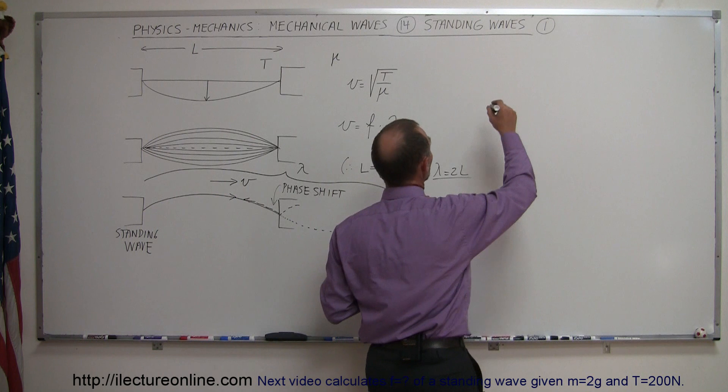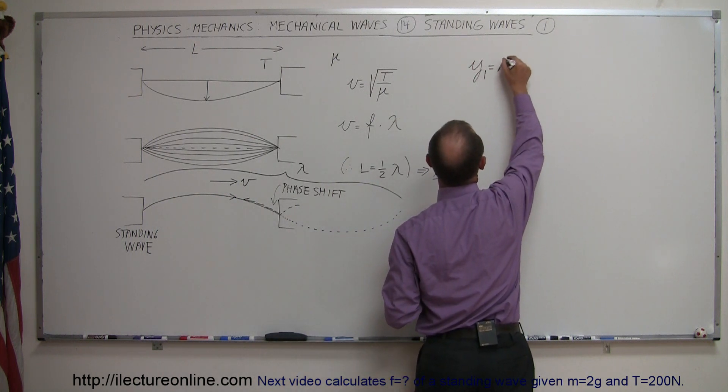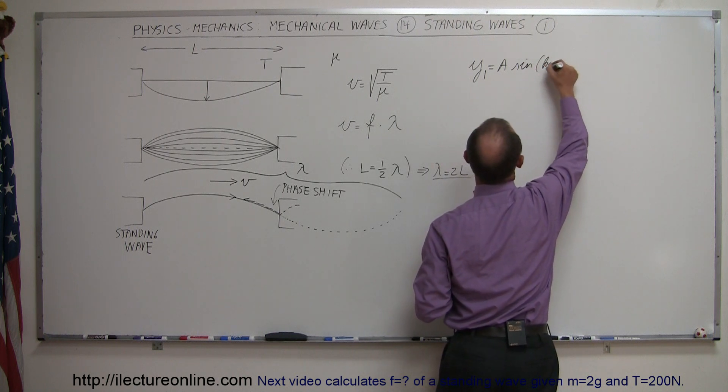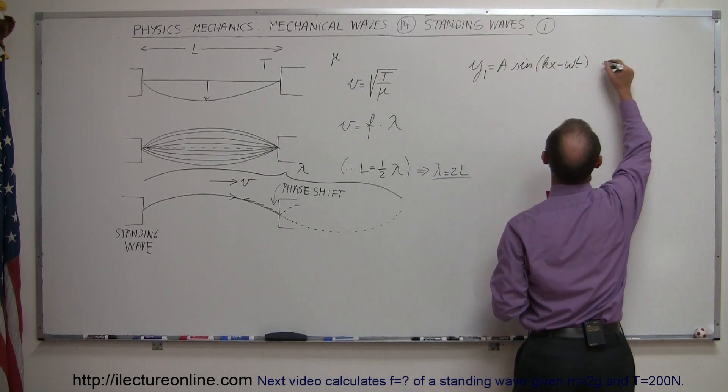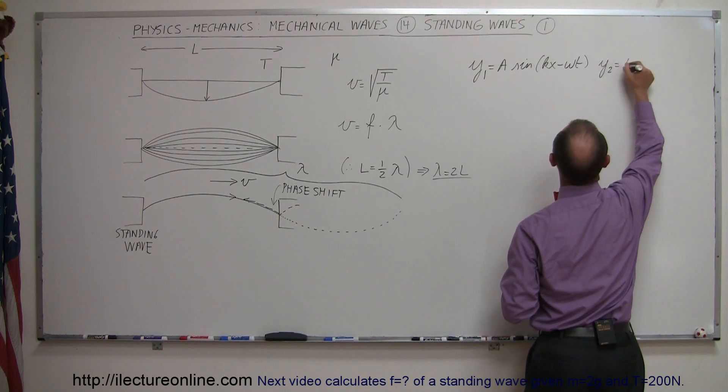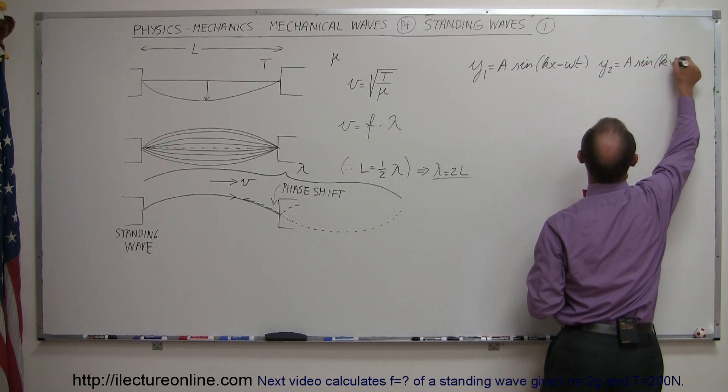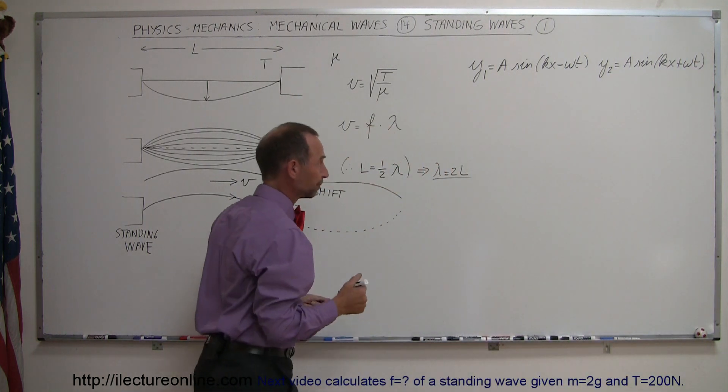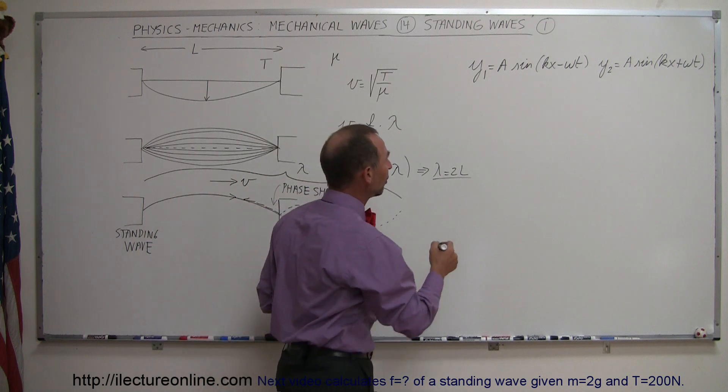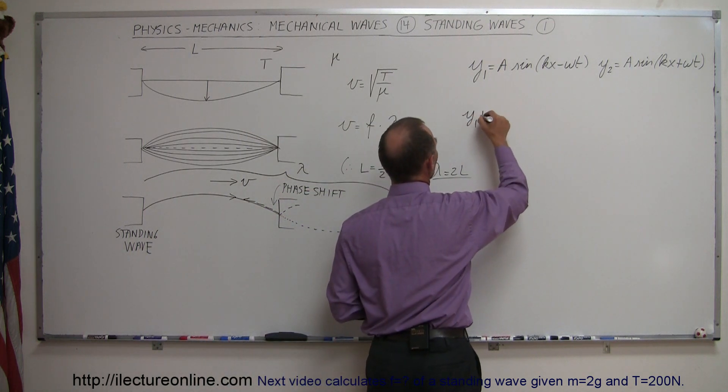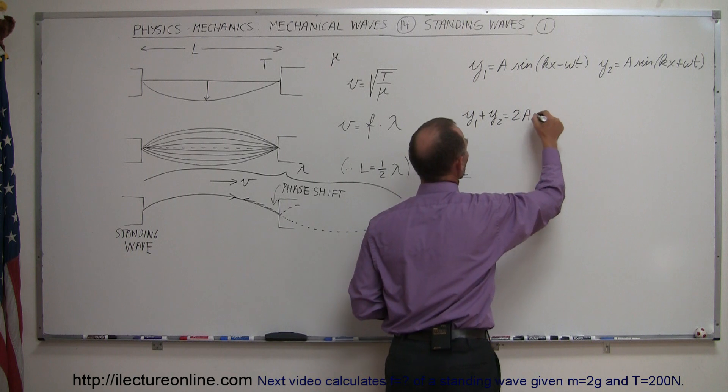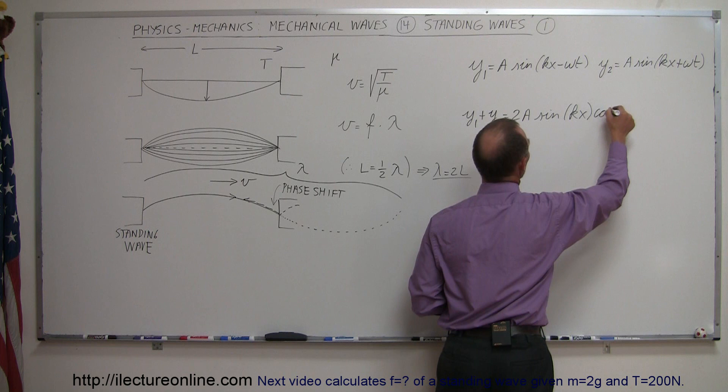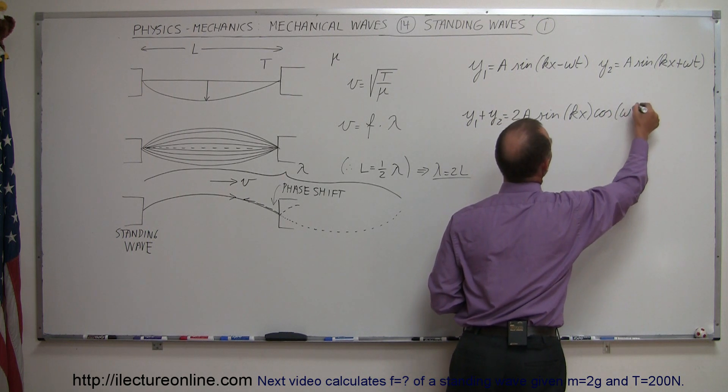Which means that the two wave equations can be expressed as y1 equals a times the sine of kx minus ωt. Let's call this wave 1. And wave 2 can be expressed as a times the sine of kx plus ωt. So the only difference is that they move in opposite directions. If we combine those two waves, we can then say that y1 plus y2 is equal to 2 times the amplitude times the sine of kx times the cosine of ωt.